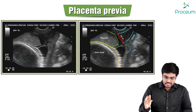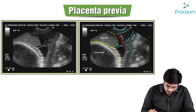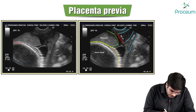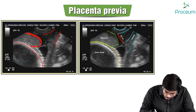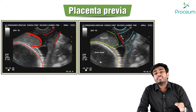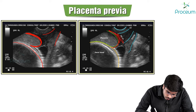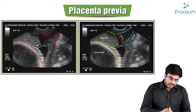On transvaginal ultrasonography, you can see the fetal head, the cervix, and an echogenic area representing the placenta. In the image shown, the placenta is almost partially covering the internal cervical os — consistent with type 3 placenta previa in the lower uterine segment.